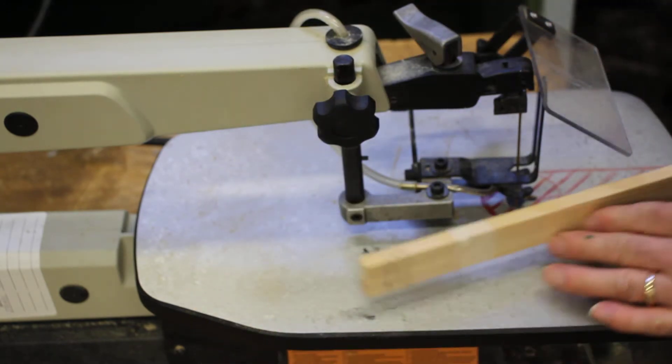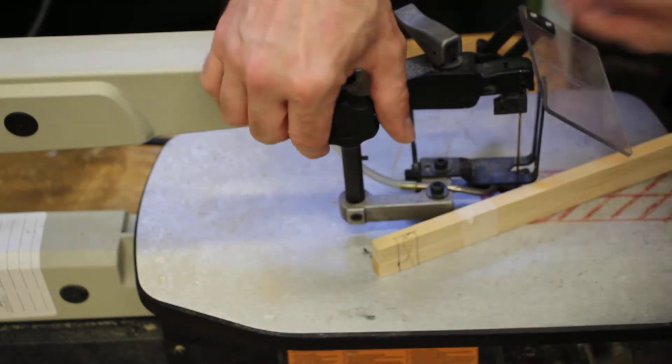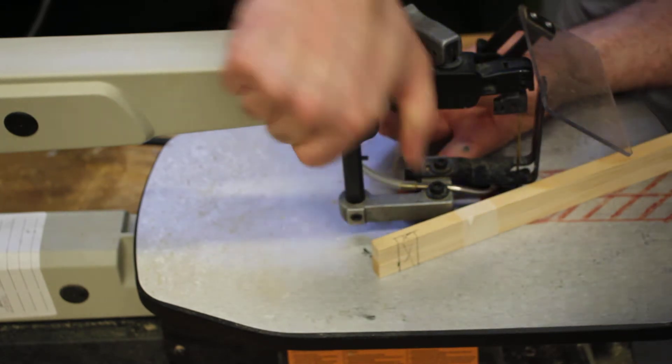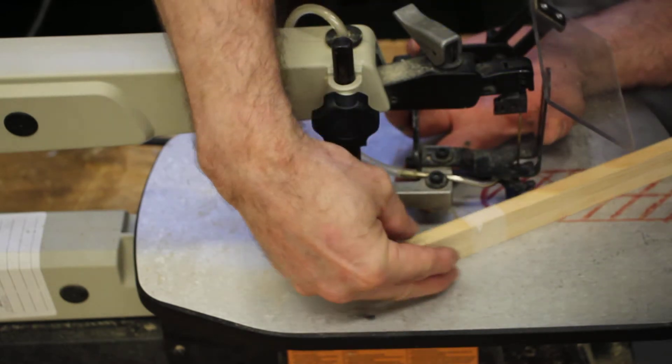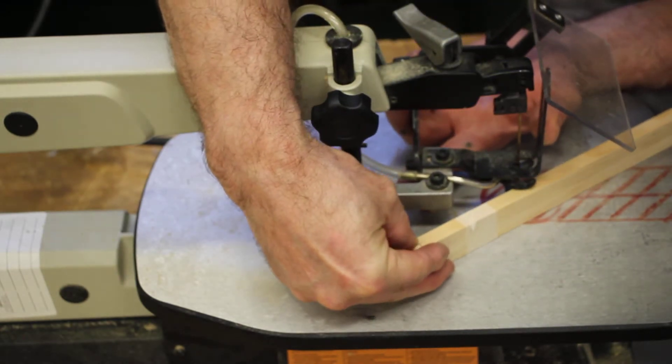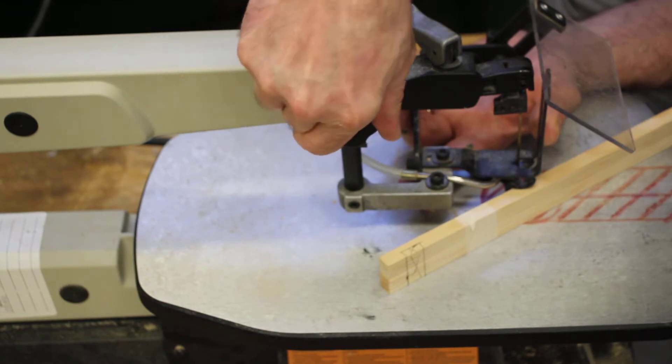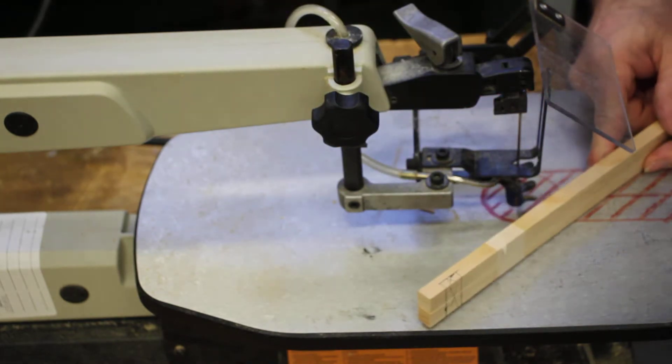To properly adjust our scroll saw, you're going to raise the guard just enough so these little fingers put some pressure on your material. This will keep it from jumping around and you losing control of it. There should be just the slightest bit of tension on there.